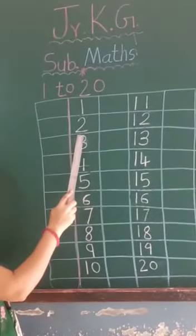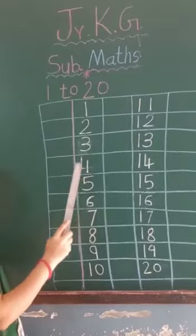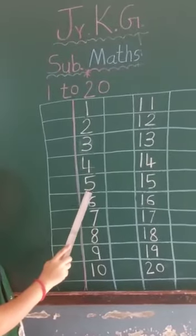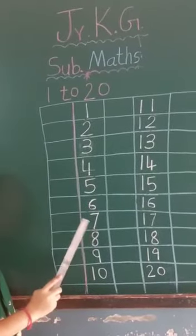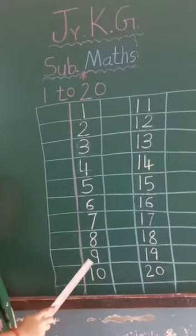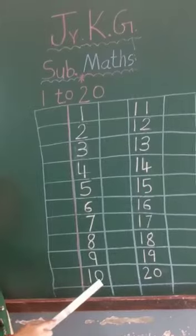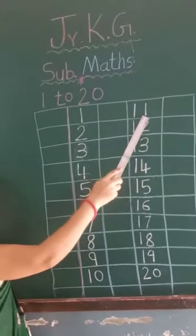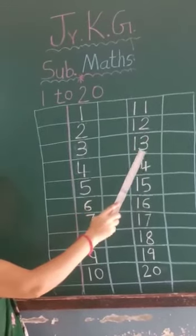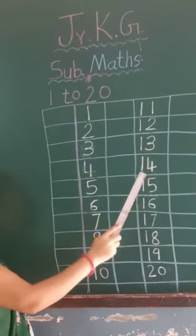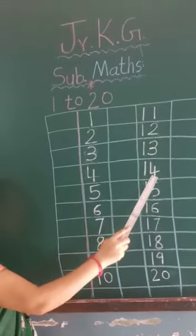1, 2, 3, 4, 5, 6, 7, 8, 9, 10. One, one, 11. One, two, 12. One, three, 13. One, four, 14.